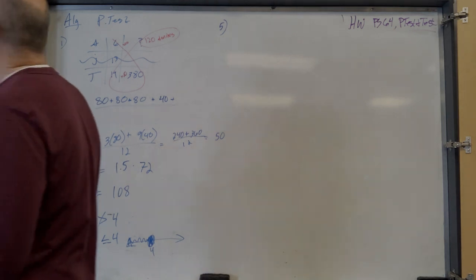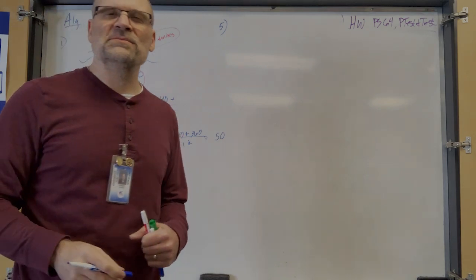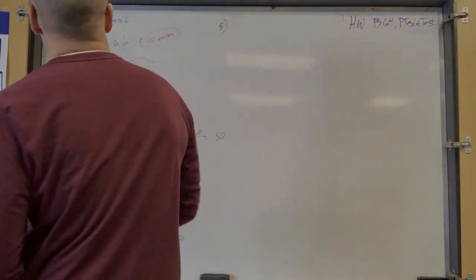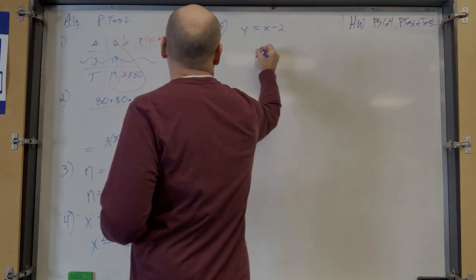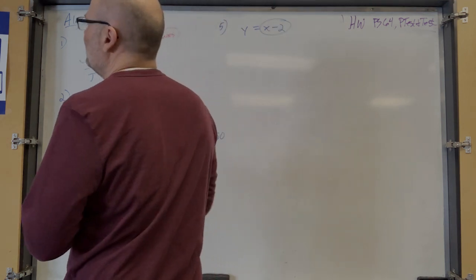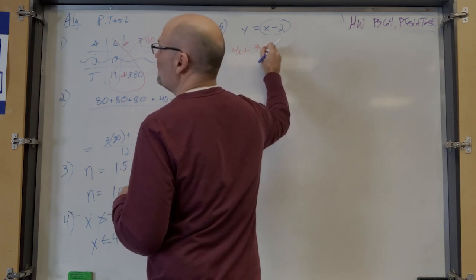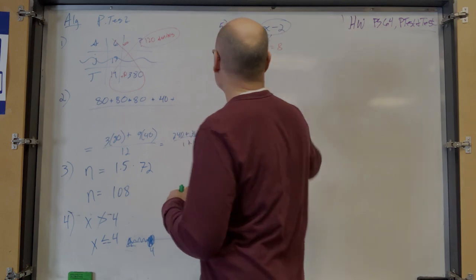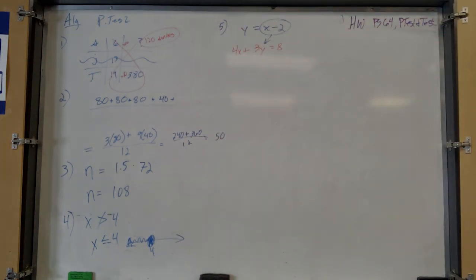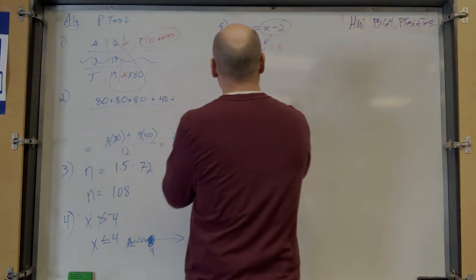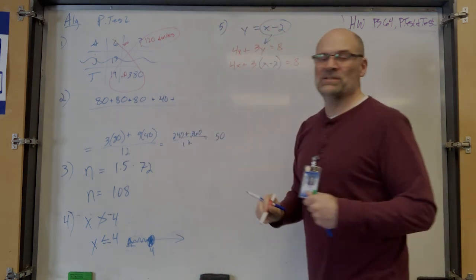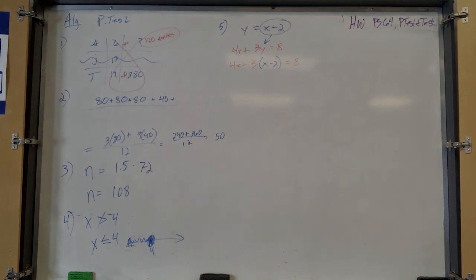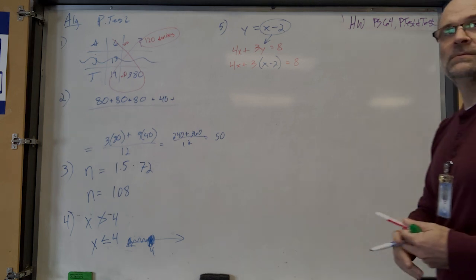Number five: use substitution to solve the system of equations. Substitution is like a new wrapper name — y doesn't want to be called y anymore, y wants to be called x minus 2. So plug that into the equation 4x plus 3y equals 8. Instead of y, write x minus 2: 4x plus 3(x minus 2).